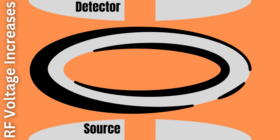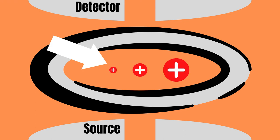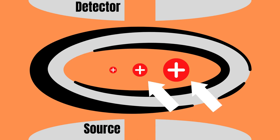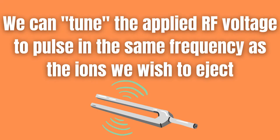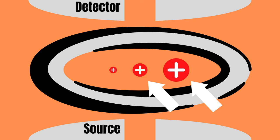But what if we want to analyze the smallest ions in the sample in more detail? How can we get rid of the larger ions first? Well, this can be done by matching the RF supplemental voltage frequency to all of the ions we are not interested in.